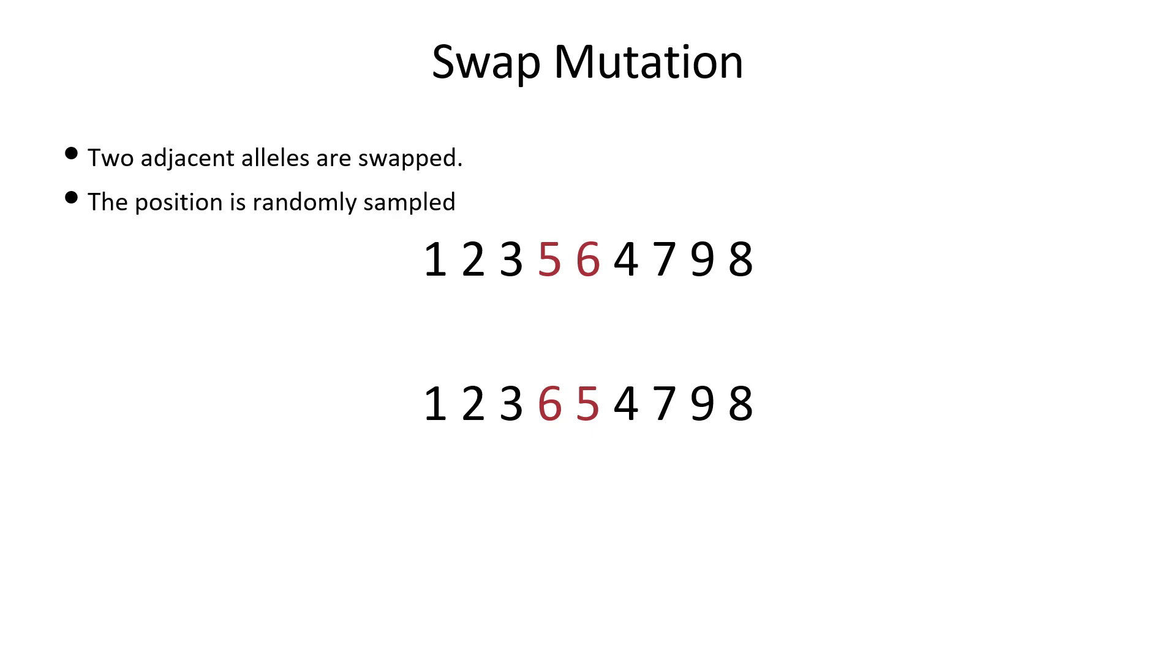Swap mutation is simple. Randomly pick a position in the chromosome, then swap it with the adjacent value. In the example given, 5 and 6 are swapped to the mutated chromosome. Note that the second path is quite close to the original path differing in only two edges, so the property of small perturbation holds.